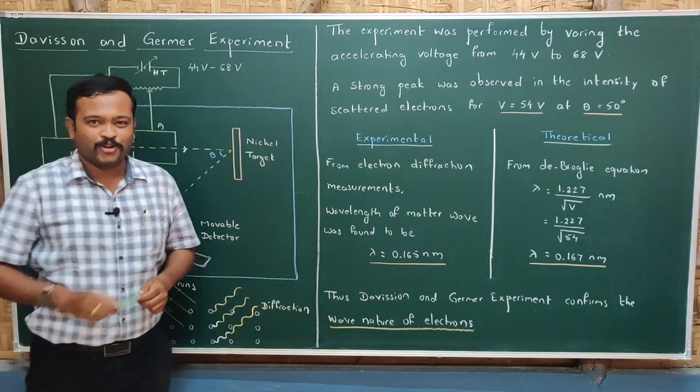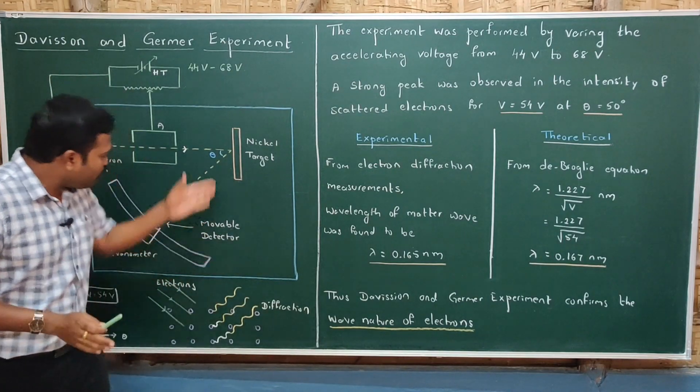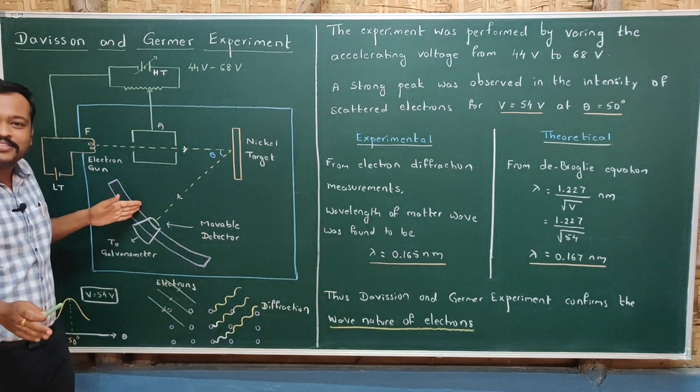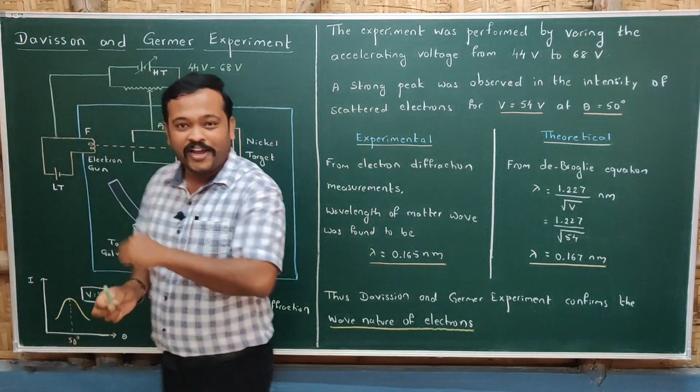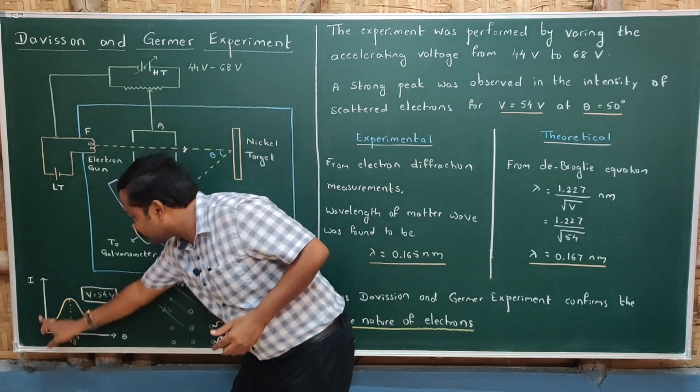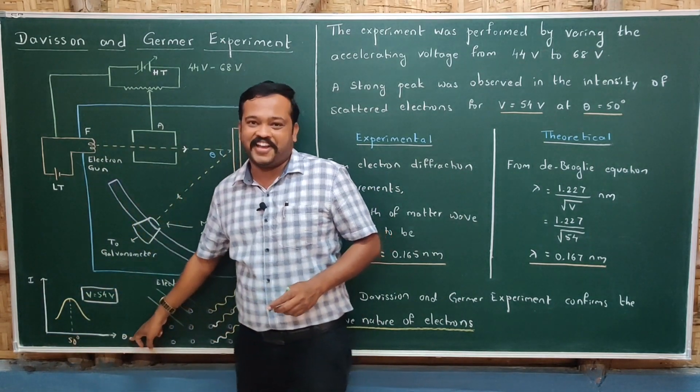At a particular accelerating voltage, surprisingly, more number of electrons were scattered at some angles and less number of electrons were scattered at some other angles. That is why the graph was plotted between intensity of scattered electrons versus scattering angles.